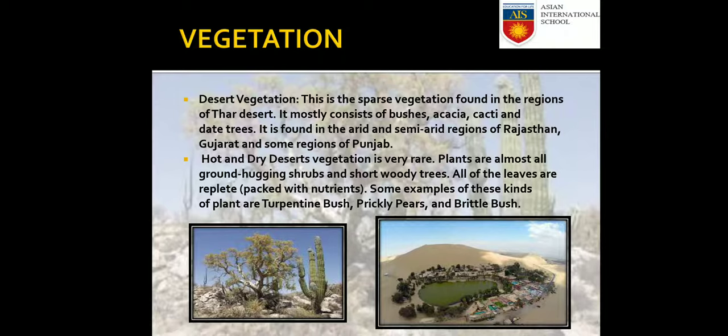The sparse desert vegetation found in the Thar mostly consists of bushes, acacia, cacti, and dead trees, found in the arid and semi-arid regions of Rajasthan, Gujarat, and parts of Punjab. Plants are almost all ground-hugging shrubs and short woody trees; all leaves are packed with nutrients. Examples include turpentine bush, prickly pears, and brittle bush.